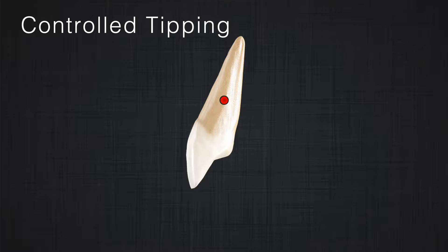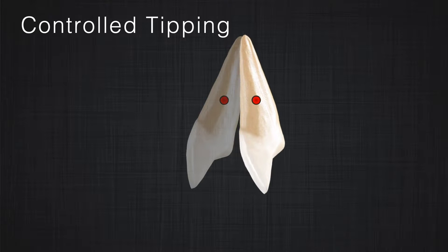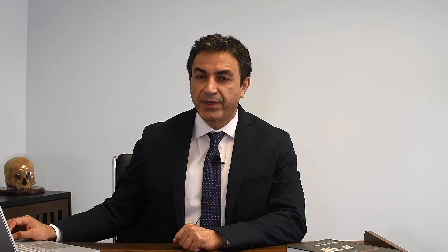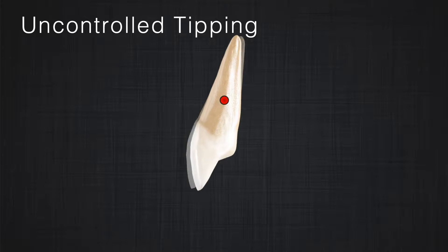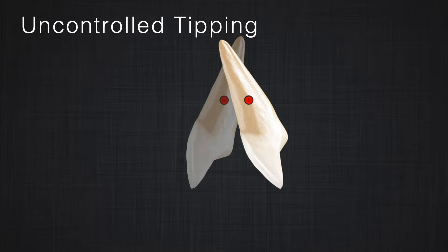One is controlled tipping, where the apex of the tooth stays stationary and it seems that the whole tooth rotates around the apex. The second type is called uncontrolled tipping, where the apex moves to one side, the crown moves to the other side, and it seems that the tooth is rotating around a point between the apex and the center of resistance. It is a very common movement in orthodontics.